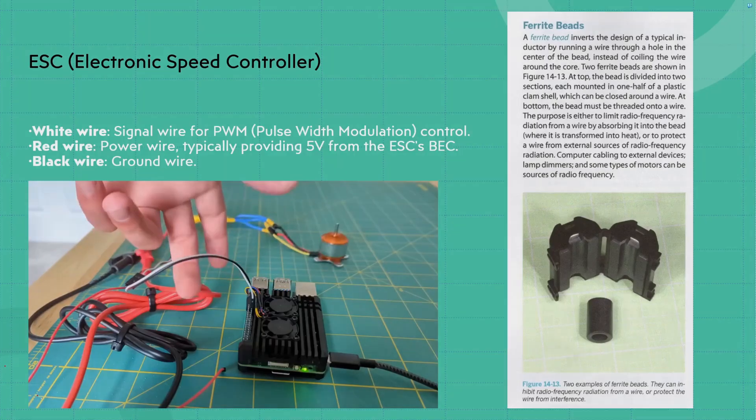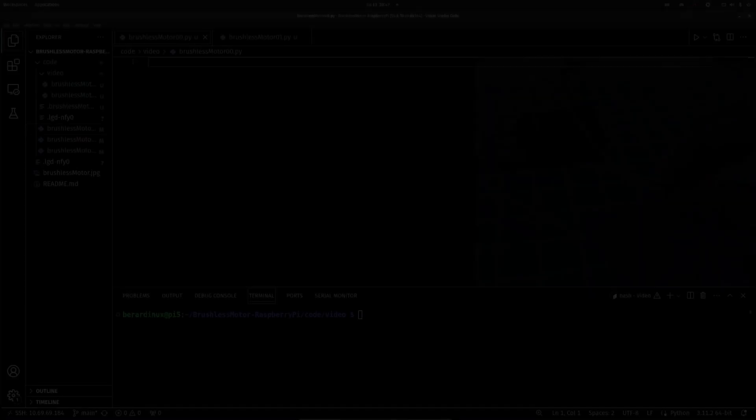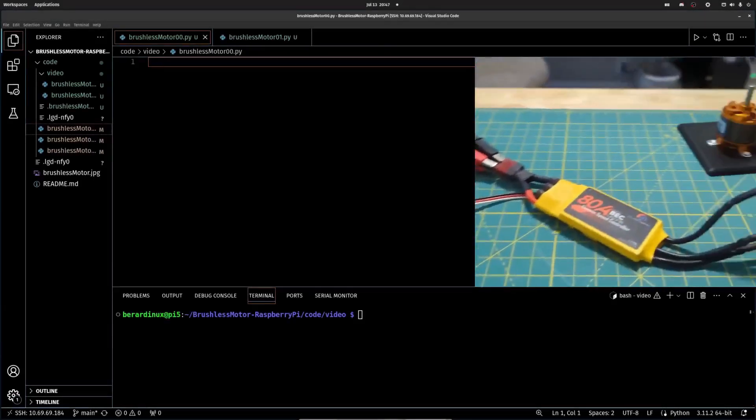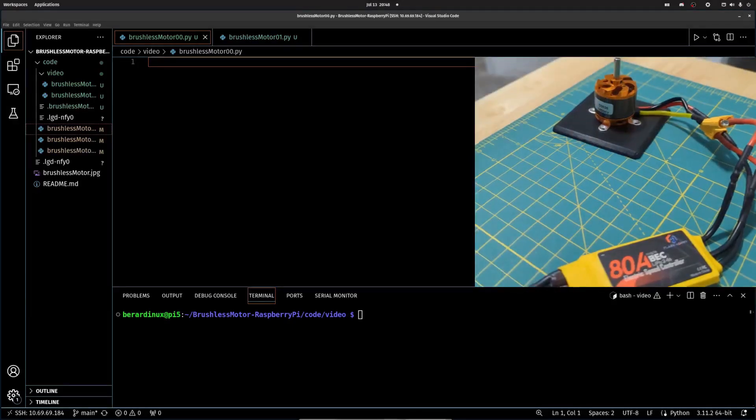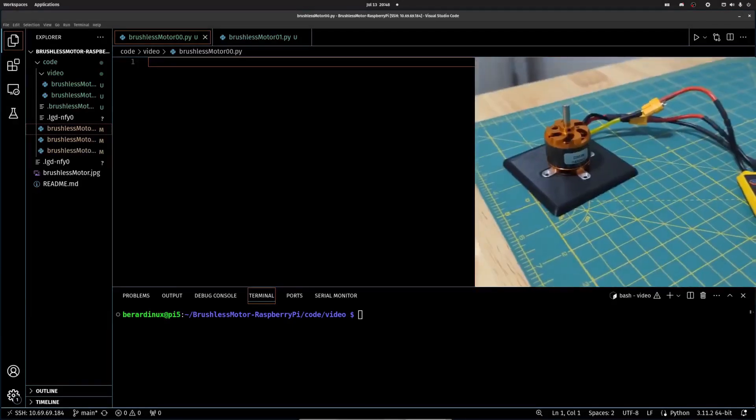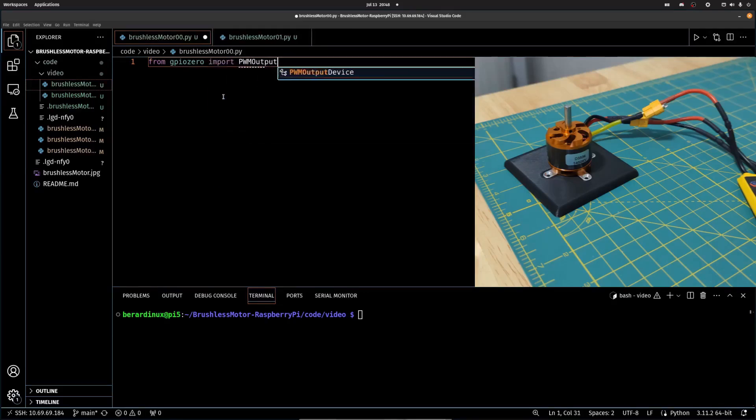All right, so we can hop over into the terminal and check this thing out. So now we're in VS Code. The first thing that we're going to need to start doing is import PWM output device from GPIO0, import time.